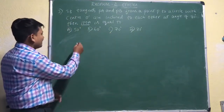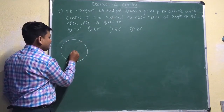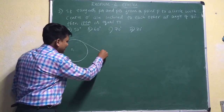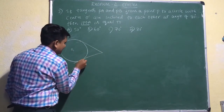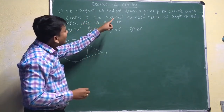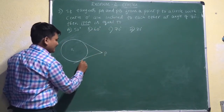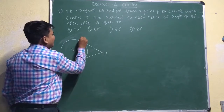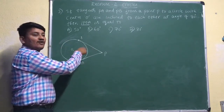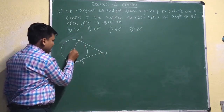I will draw the figure here. They have given a circle with center O, and tangents PA and PB. This is one tangent and here is another tangent — these two tangents from the point P. I will call this point A and this one B. PA and PB are the two tangents for this circle from point P, and here we join the line PO.